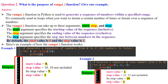Question 2: What is the purpose of the range function? The range function in Python is used to generate a sequence of numbers within a specified range. It's commonly used in loops when you want to iterate a certain number of times or over a sequence of numbers. The range function can take up to three arguments: start, stop, and step. Start specifies the starting value (inclusive), stop specifies the ending value (exclusive), and step specifies the step size between numbers.